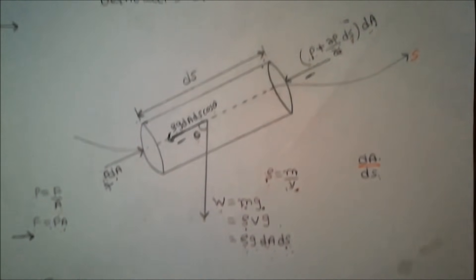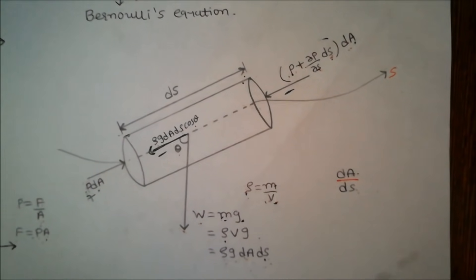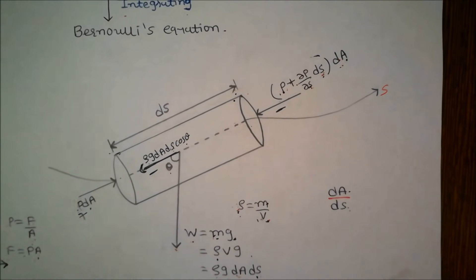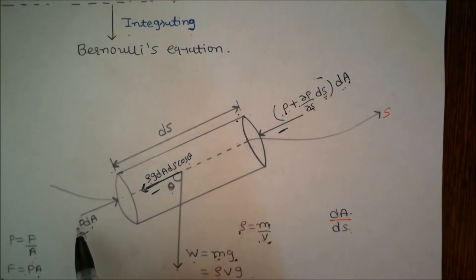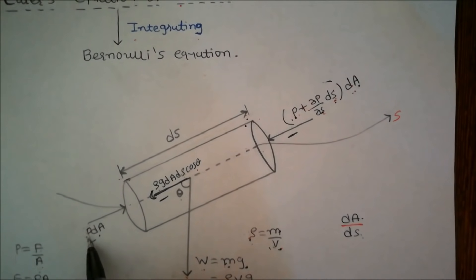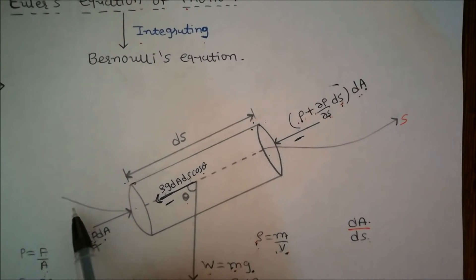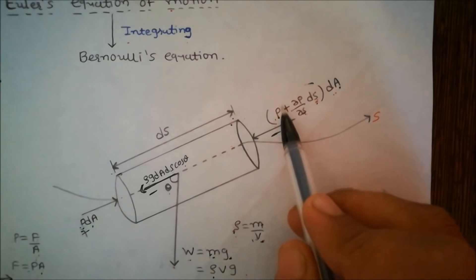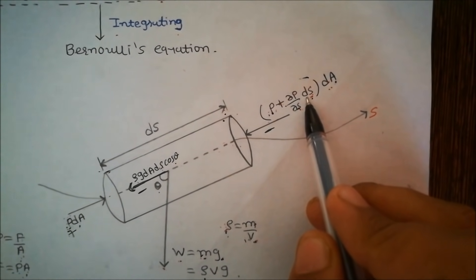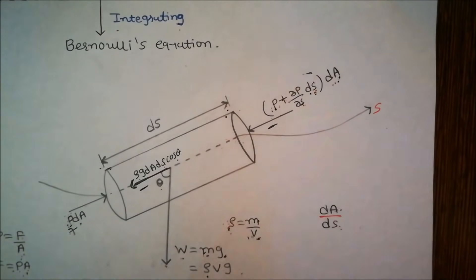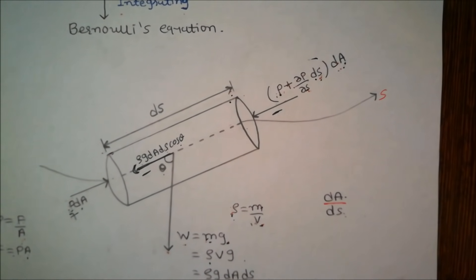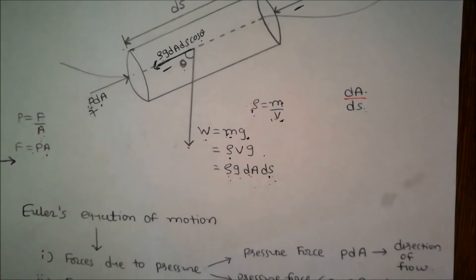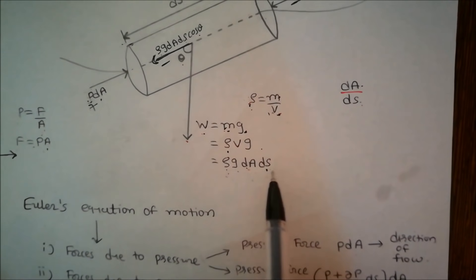In Euler's equation we consider three forces: force due to pressure and force due to gravity. The pressure force P·dA acts in the direction of flow; the pressure force (P + ∂P/∂S·dS)·dA opposes the direction of flow; and the weight force is ρ·g·dA·dS.